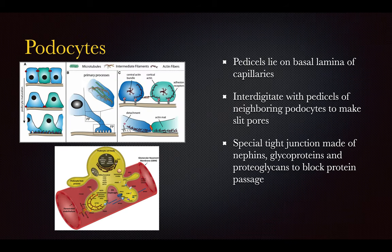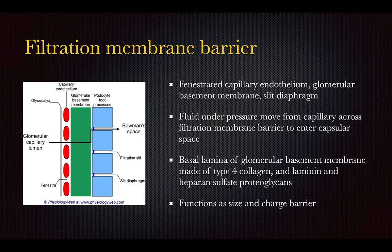Podocytes lie on the basal lamina and interdigitate with neighboring podocytes to form slit pores — special tight junctions made of nephrin glycoproteins and proteoglycans — to block protein passage. Protein in the urine is a bad sign because these structures form a robust barrier. In healthy kidneys you don't have blood or protein in the urine; it is only when kidneys are breaking down that these substances appear in the urine.